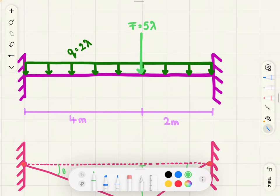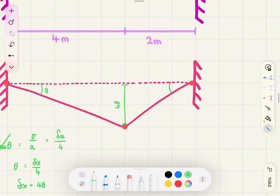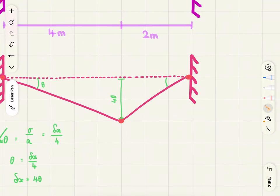This displacement due to the point load 5 lambda. Now, looking at this triangle, we can find this angle, let's call it phi for now, in terms of theta.